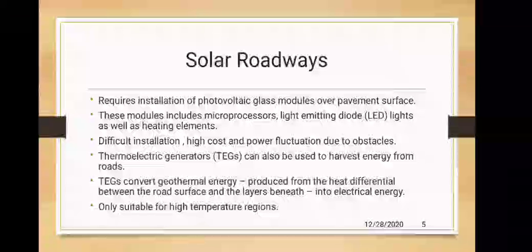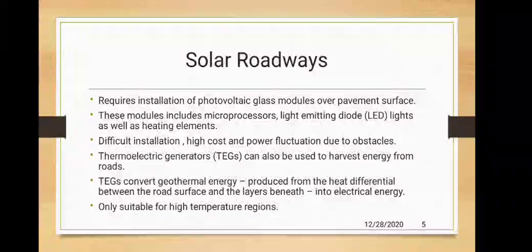The high cost and power fluctuation due to these obstacles are disadvantages of solar roadways. Despite these challenges, several companies have developed photovoltaic modules that can either replace asphalt or be placed directly on top of existing roads. In the United States, solar roadways have developed solar modules that include microprocessors for intelligent communication. In China, a 2-kilometer road has been built in Shandong province with the aim of powering streetlights and containing a snow melting system.